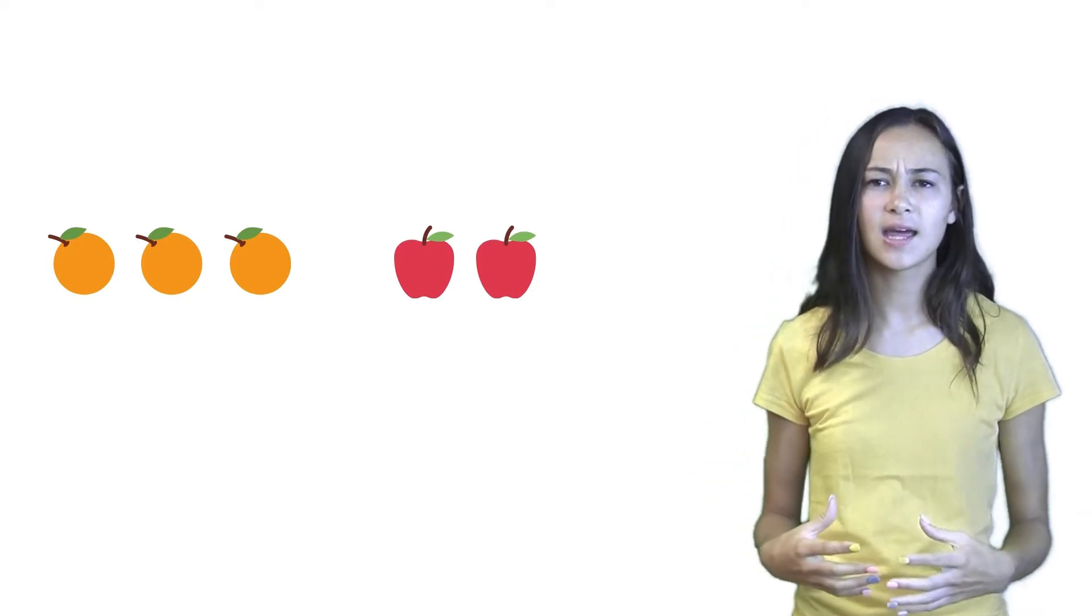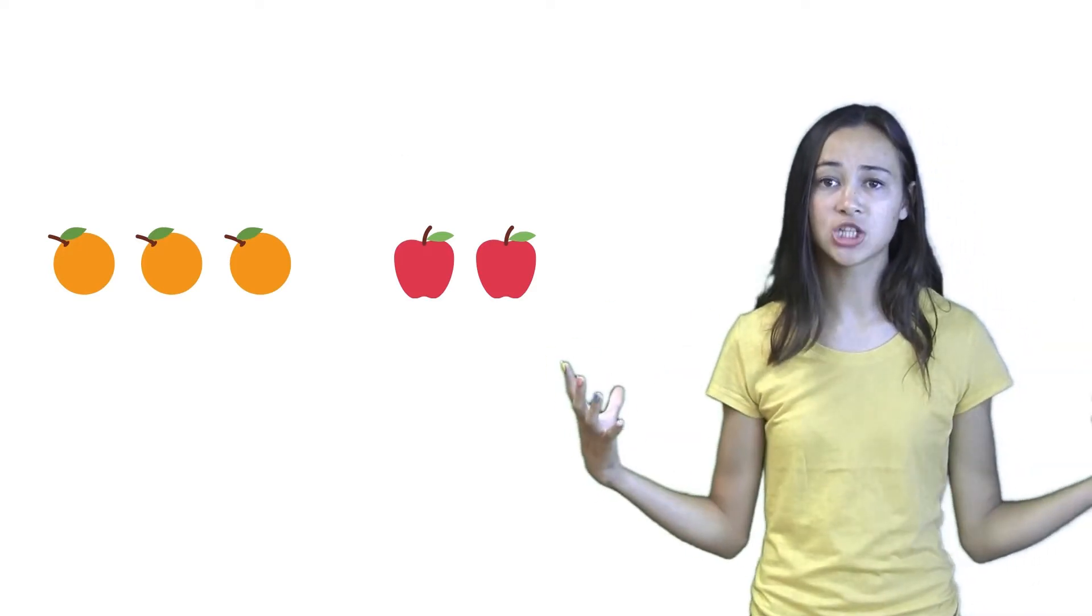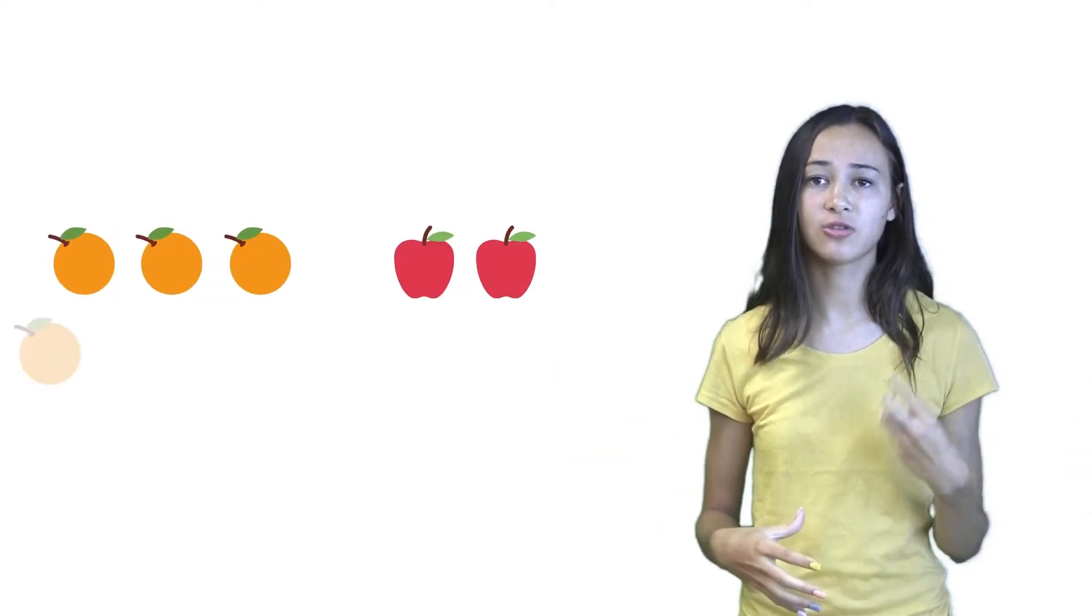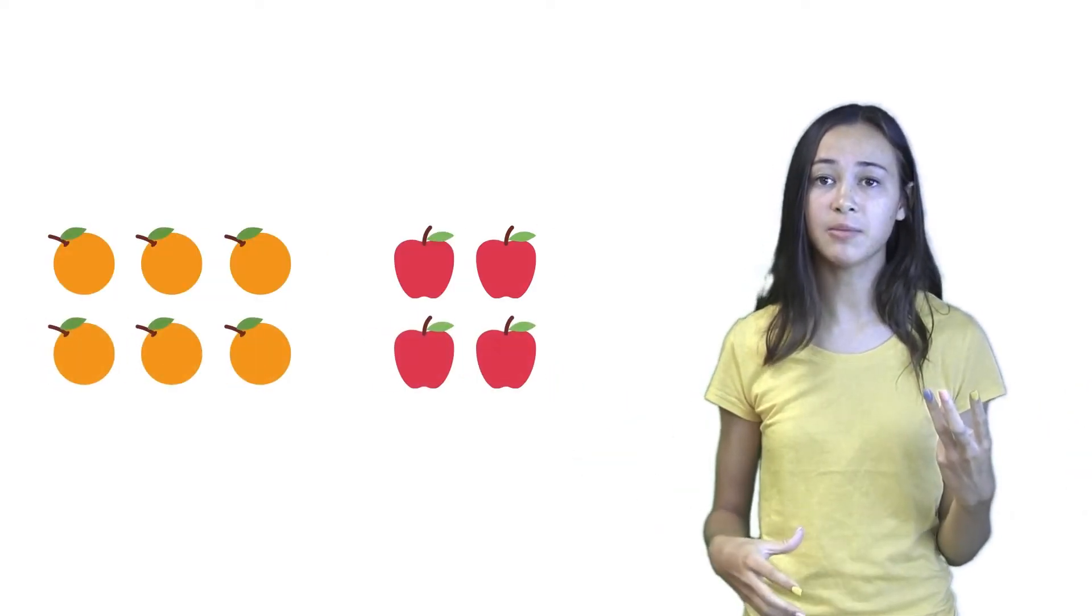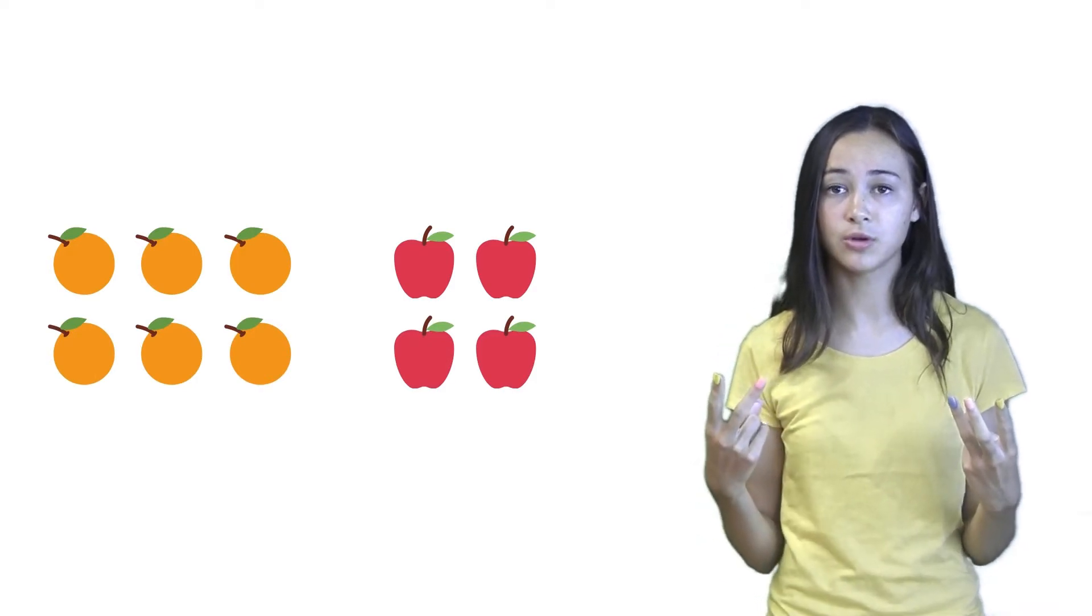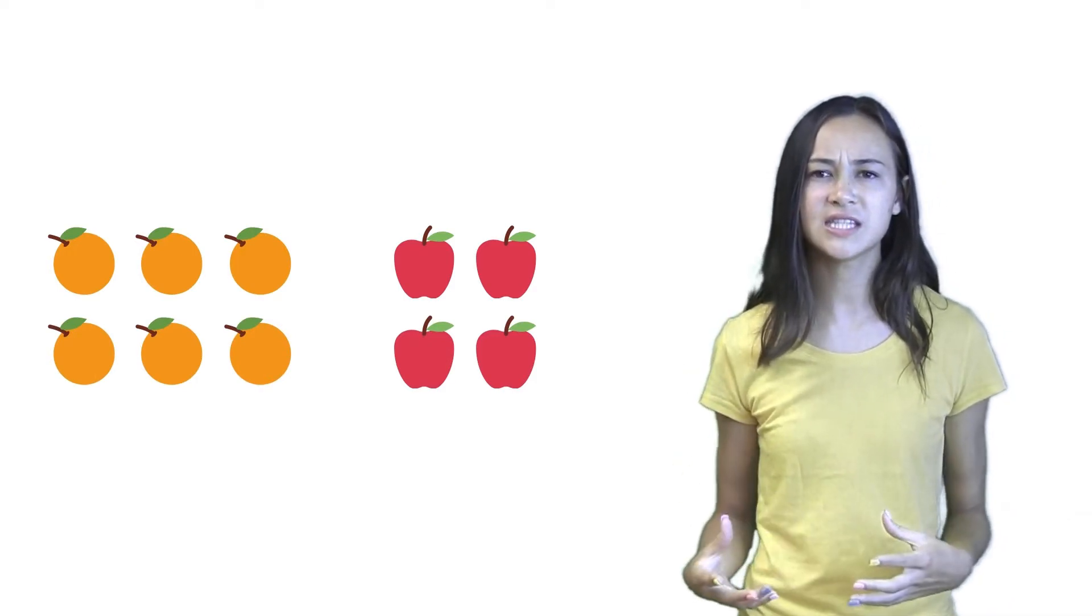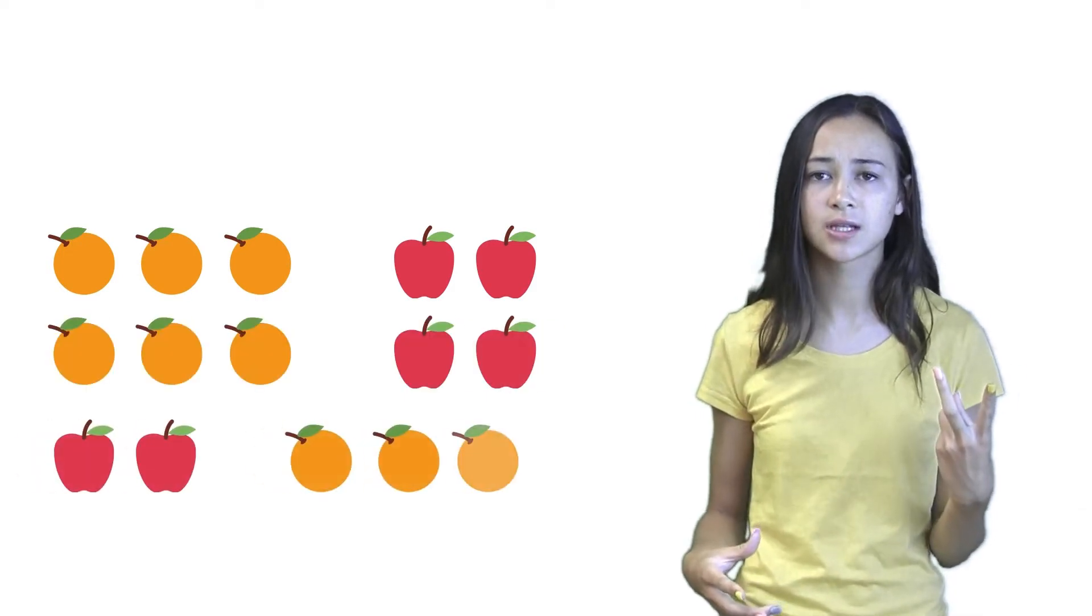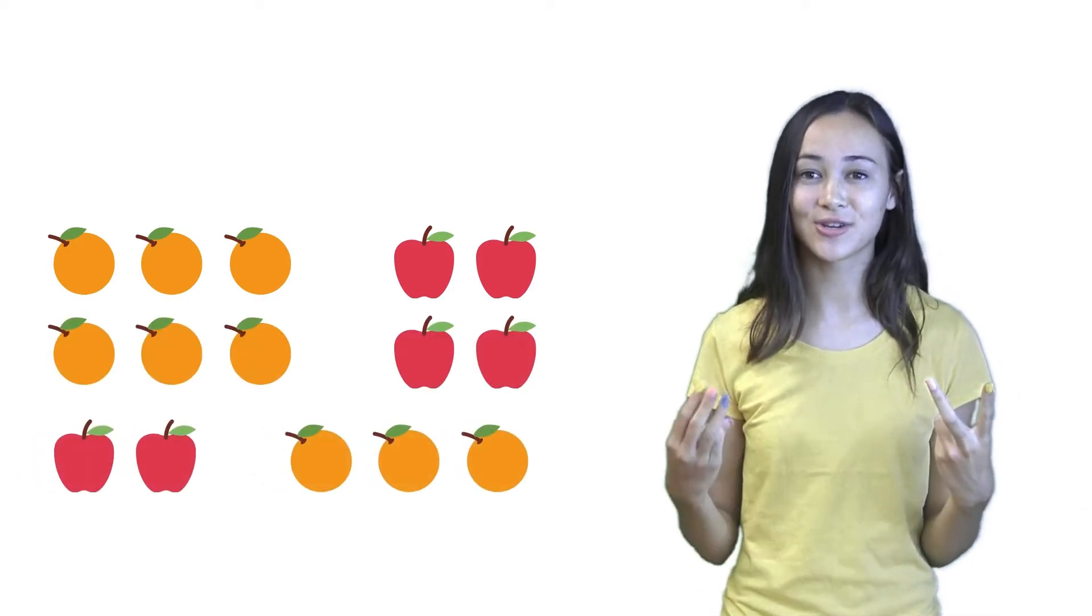And let's say that Martha wants to make a bigger batch of juice. She's going to have to add three more oranges. That means she'll have to add two more apples. But what if it's the other way around? What if she wants to add two apples? Then she'll have to add three more oranges.